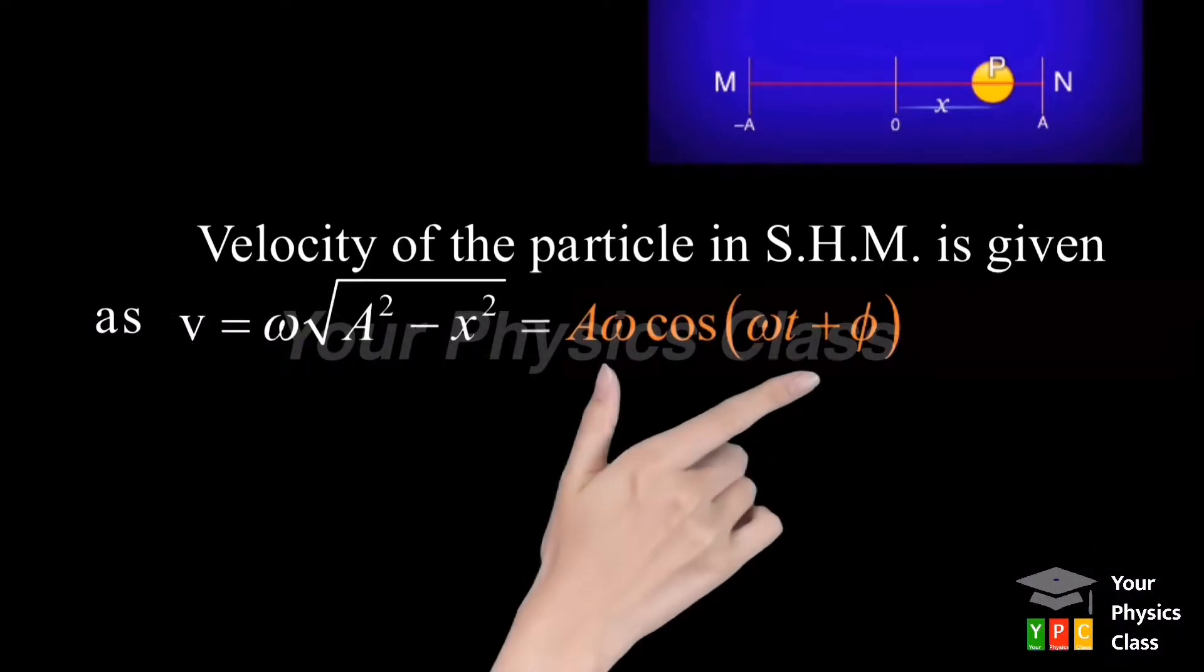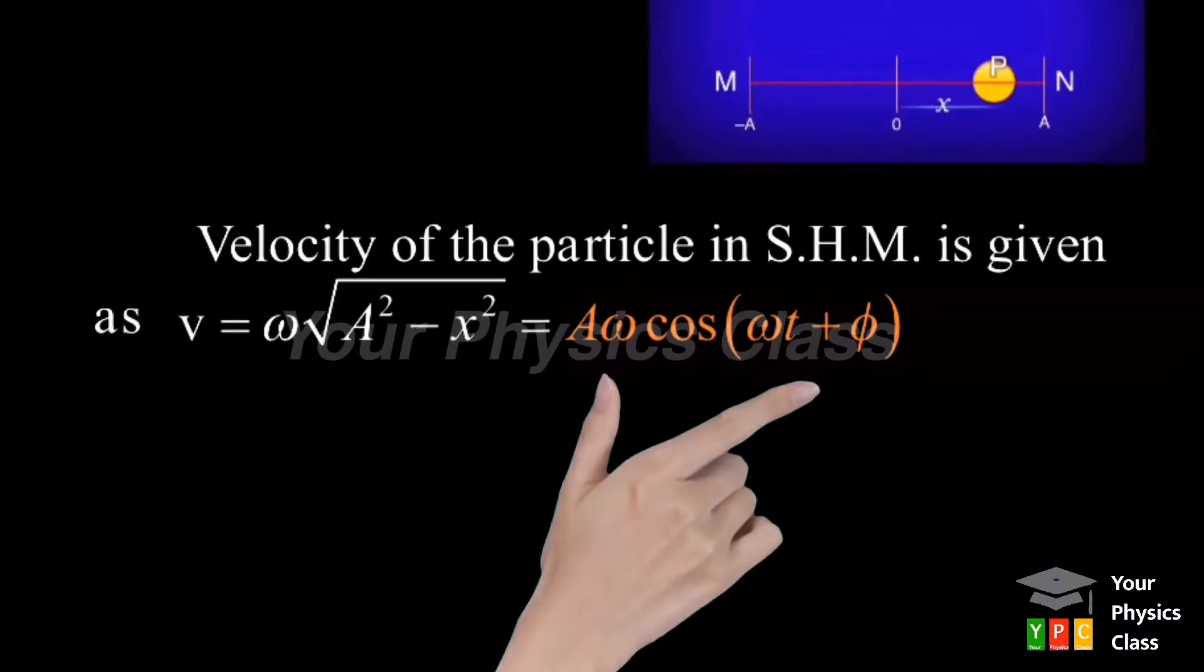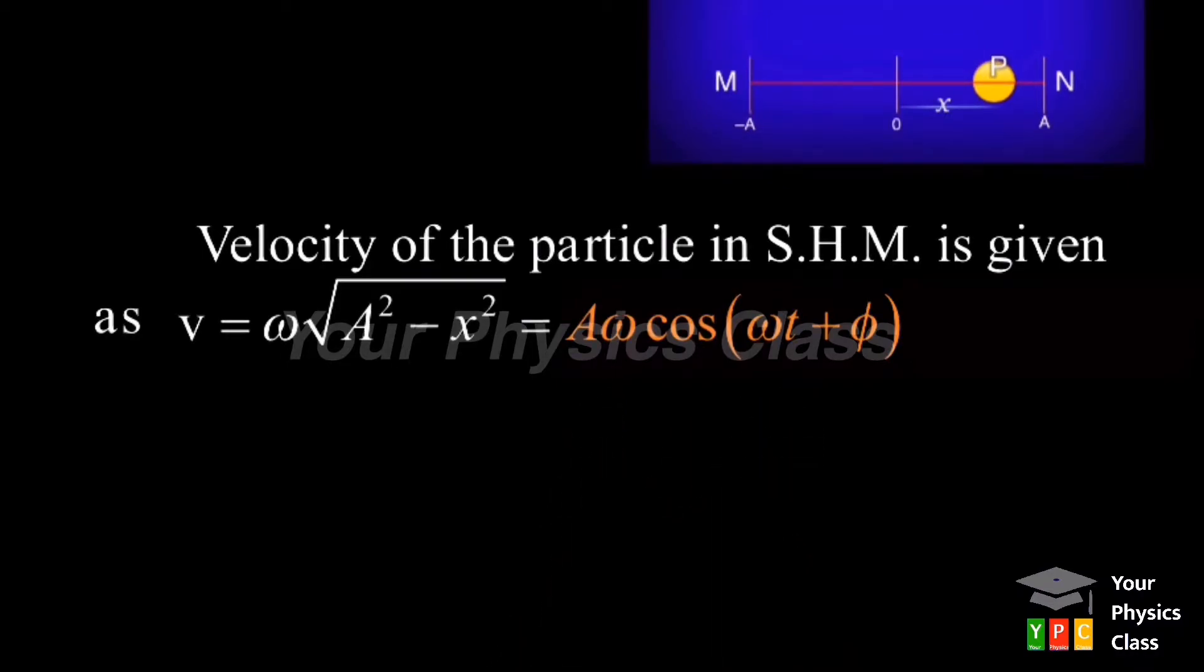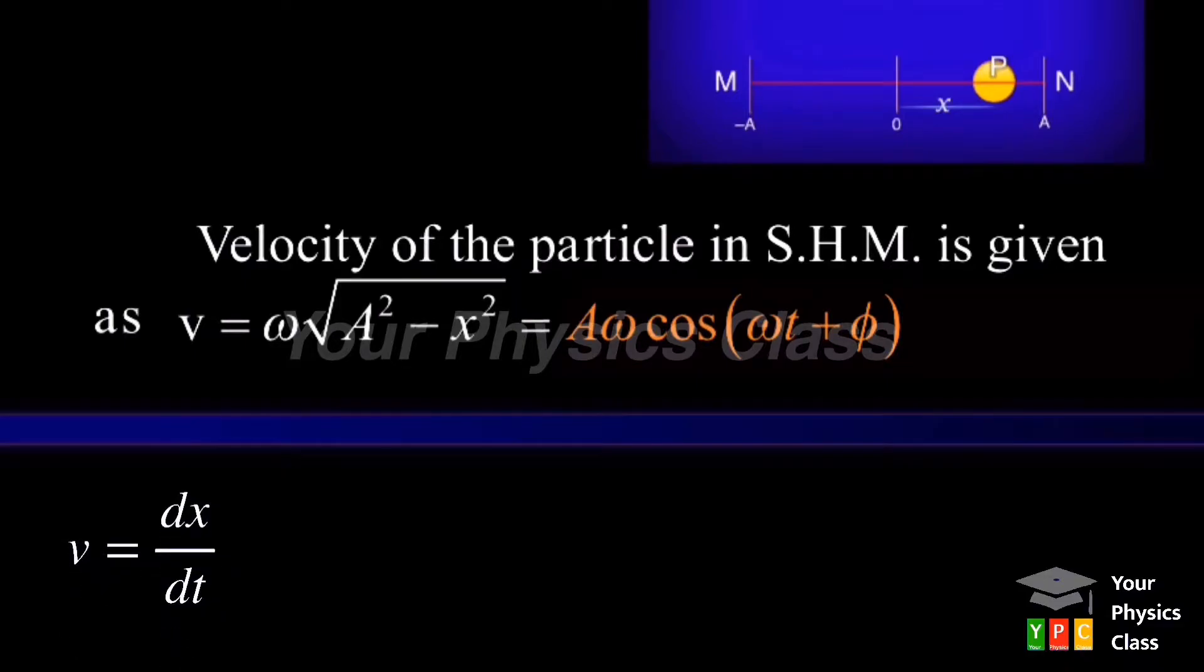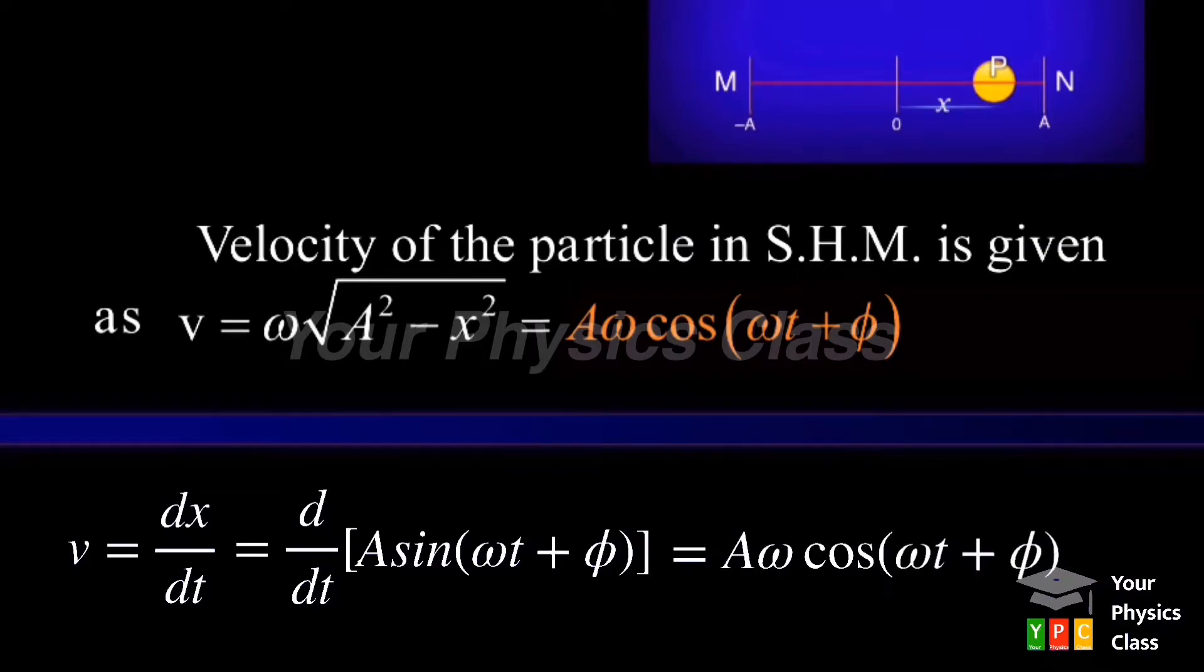This velocity in terms of time, we can write as negative a omega sin of omega t plus phi. Friends, this formula is derived from the derivative of displacement, which we can see on screen.